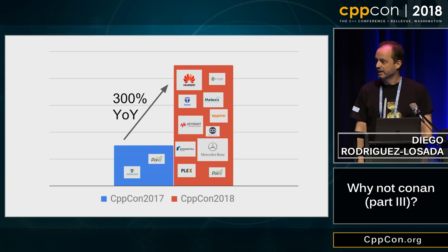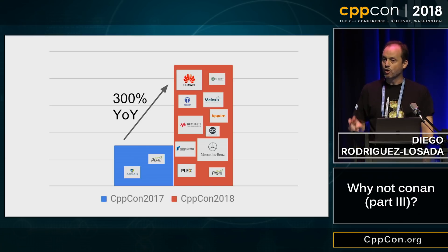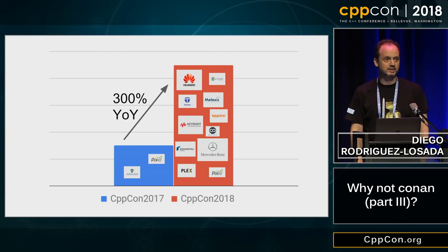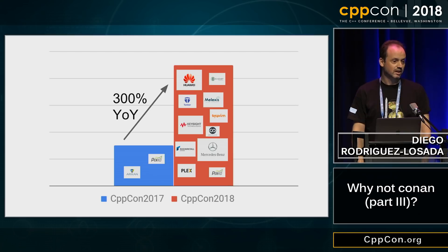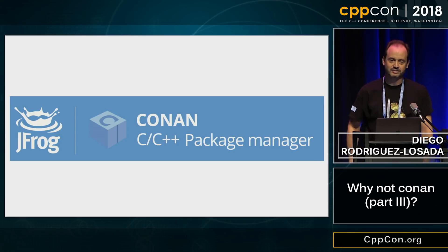So with all this data, I can only conclude that there are only two kinds of C++ package managers: the ones nobody uses, and the ones when people complain about. Like Conan. Thank you.